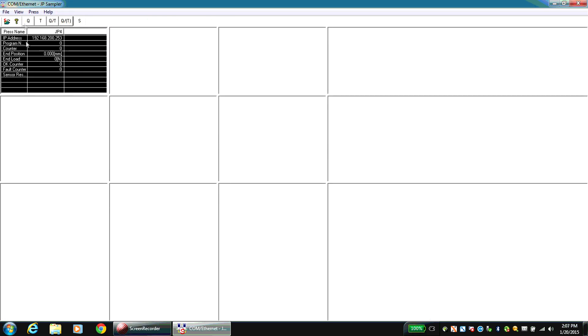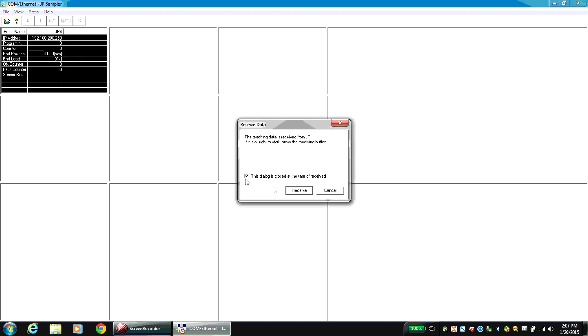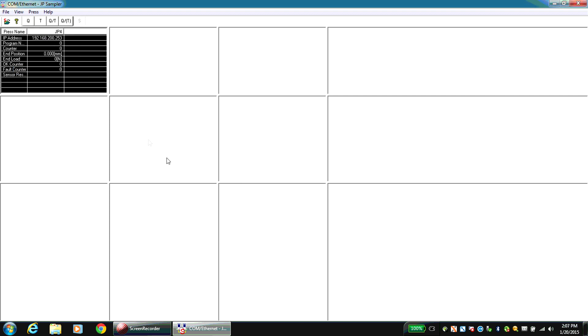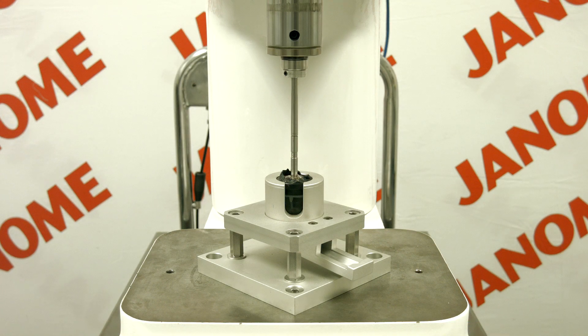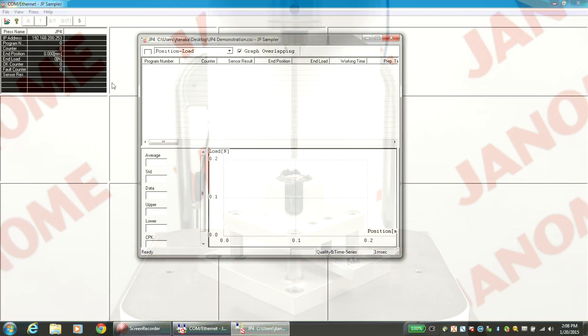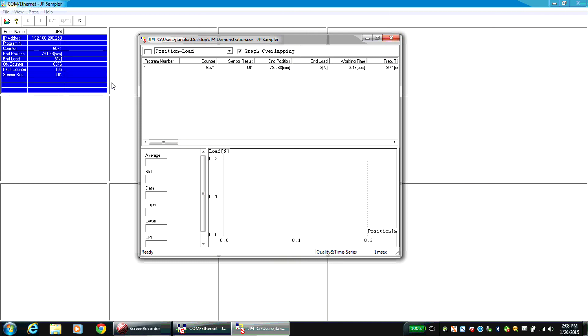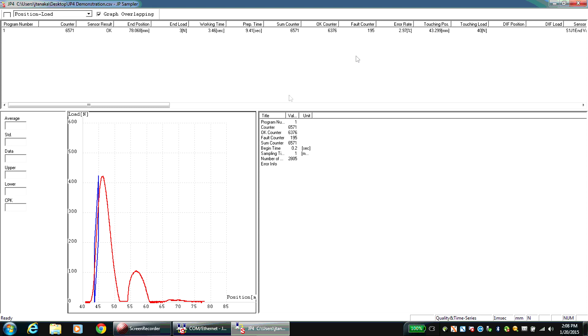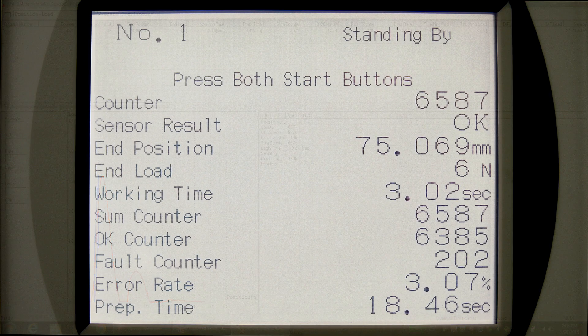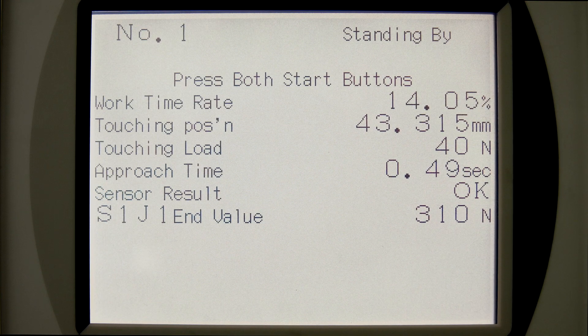Open JP Sampler and change the Sensor CPK setting to Valid in the View menu. Click the QT icon to ready the program for data collection. Run the Press program, and you will be able to view the results in the Sampler program window. At the highest data resolution setting, the Load Position data is transmitted in seconds. This data is also available in the front panel screen by pressing the Display button twice.